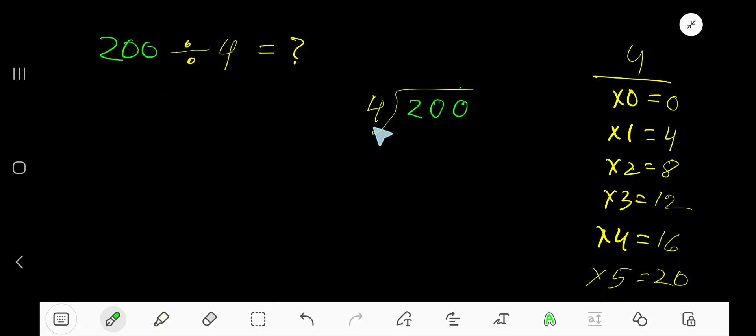200 divided by 4. Here 4 is a divisor, so we need the multiplication table of 4. 4 times 0 is 0, 4 times 1 is 4, 4 times 2 is 8, 4 times 3 is 12, 4 times 4 is 16.